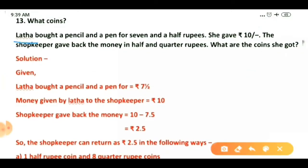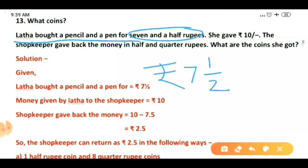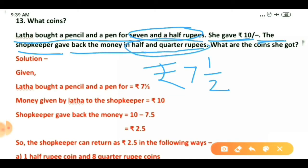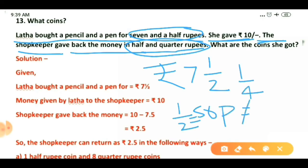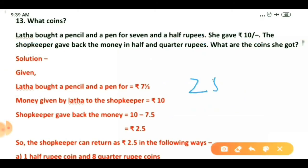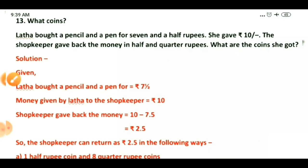The second question: Latha bought a pencil and a pen for seven and half rupees. She gave 10 rupees to the shopkeeper. The shopkeeper gave back the money in halves and quarters. Half means one upon two — half of one rupee is 50 paise — and quarters means one upon four, so one upon four of one rupee is 25 paise. We need to find what coins she got.